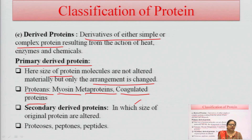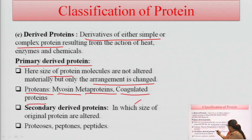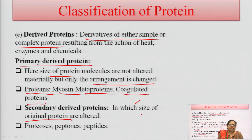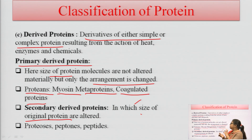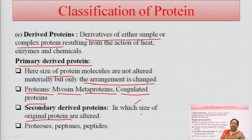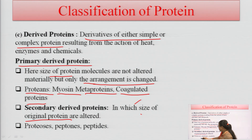In secondary derived proteins, the size of the original protein is altered by the action of heat, enzyme, or chemical. Unlike primary derived proteins where only the sequence arrangement changes, in secondary derived proteins the size itself is altered. Examples include proteases, peptones, and peptides.